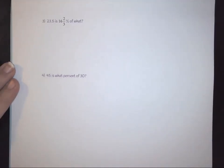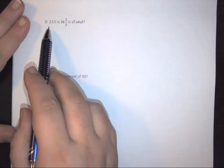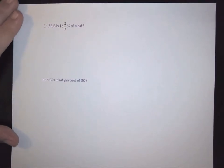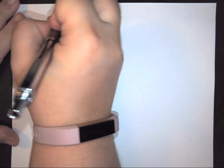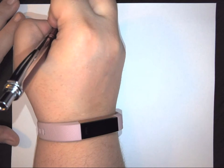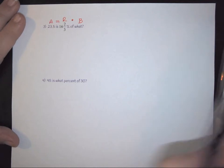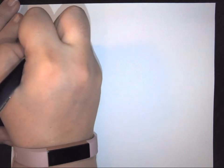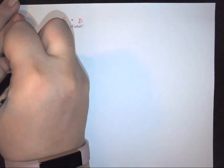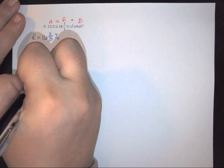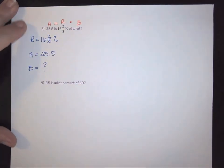Let's look at another one. So here we have 23.5 is 16 and 2 thirds percent of what? So again, if we were to try and rewrite the problem, we have A is percent of B. So when we look at our variables, R is 16 and 2 thirds percent. My A is 23.5. And my B is the unknown.